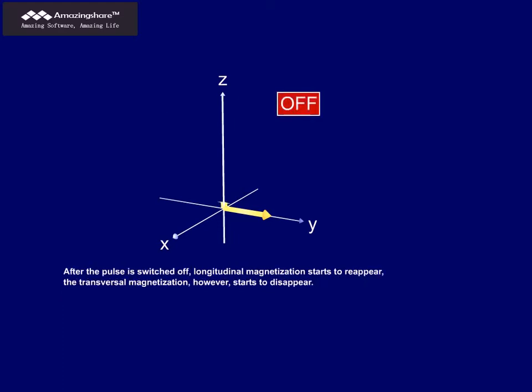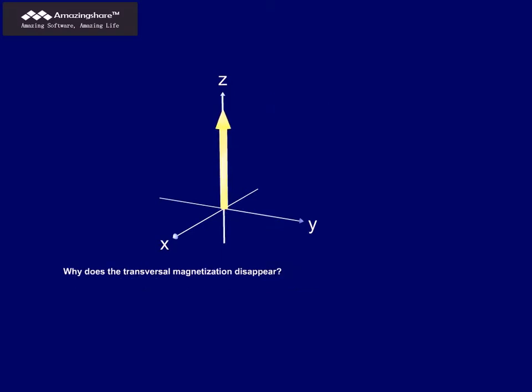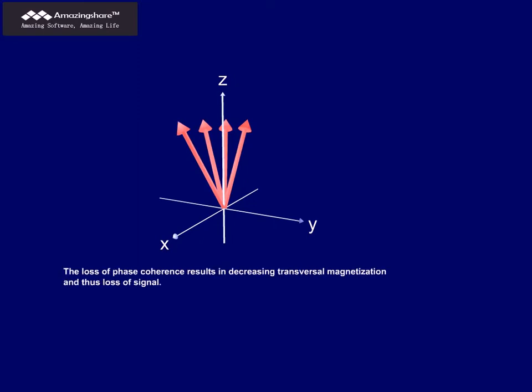After the pulse is switched off, longitudinal magnetization starts to reappear. The transversal magnetization, however, starts to disappear. Why does the transversal magnetization disappear? It is because the protons lose phase coherence, as we learned earlier. The loss of phase coherence results in decreasing transversal magnetization and thus loss of signal.